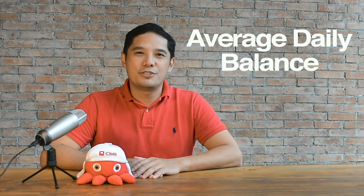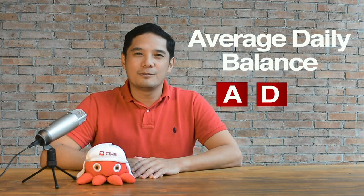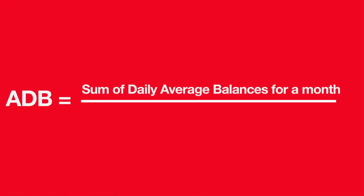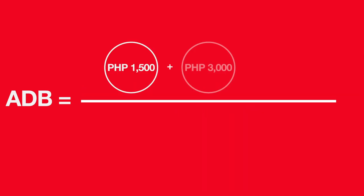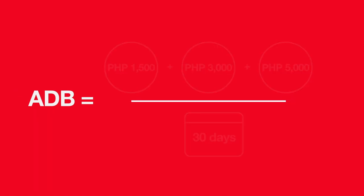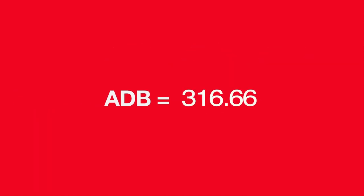Another important banking term you need to know is average daily balance, or ADB. Your ADB is the total number of daily balances in your account divided by the number of days in a month. Banks use your average daily balance to calculate interest instead of using your monthly, weekly, or yearly balance, so you're sure to get the most out of your savings.